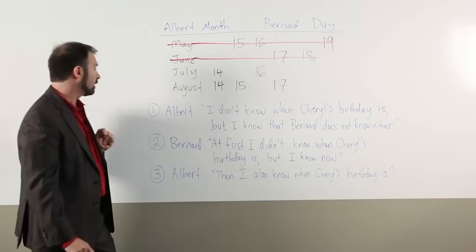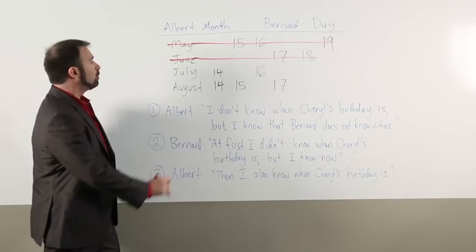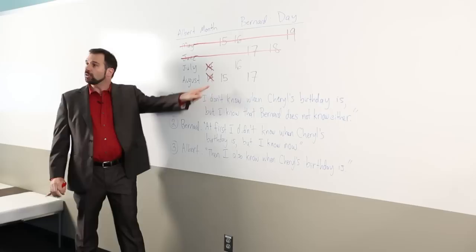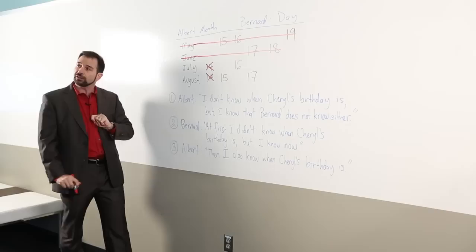Well, he cannot have been told the number 14. Why? Because then there would be two possibilities, July or August, and he would have no way of knowing which. So we can cross those out, and we're left with these three possibilities: August 15th, July 16th, or August 17th.